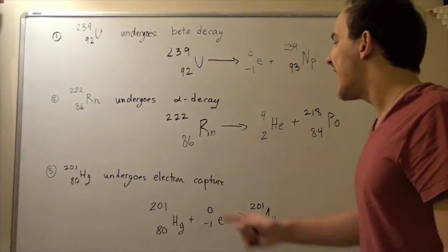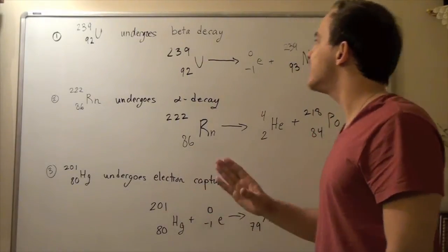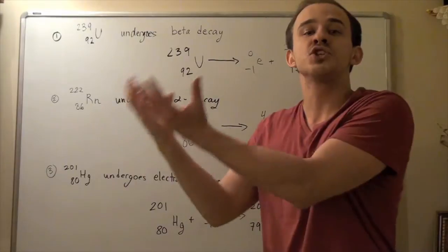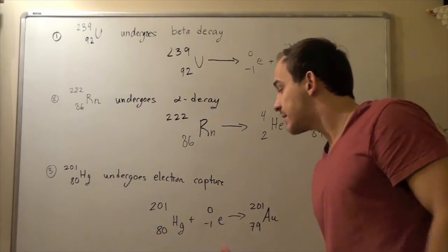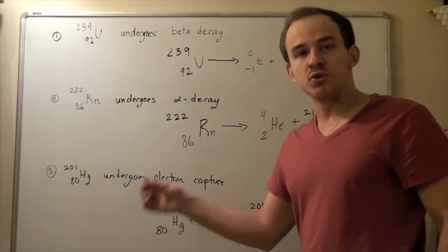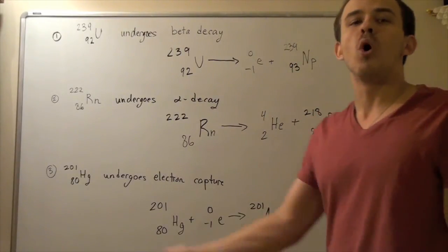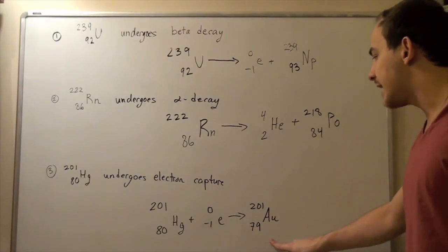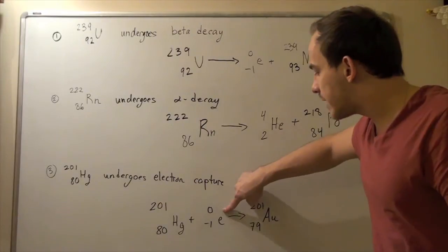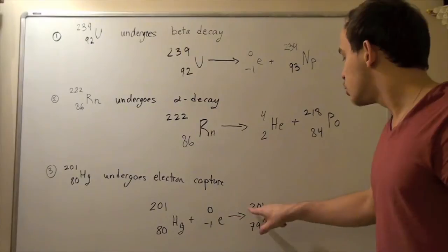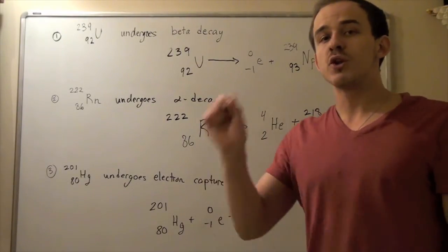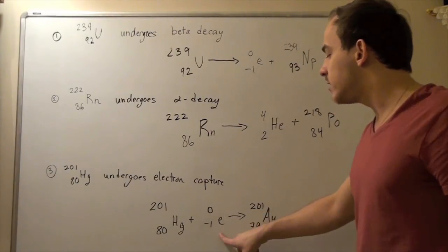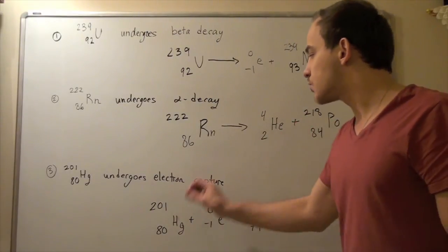This atom undergoes electron capture. Electron capture is the reverse of beta decay in the sense that instead of releasing electrons, it captures an electron. This atom takes up one electron, which reacts with a proton to produce a neutron. So now we have one less proton — 79, because 80 plus negative one gives us 79. The nucleon number remains the same because the electron does not have any neutrons. Now we have 201 minus 79, giving us 122 neutrons. That means one neutron was created from the reaction of one electron plus one proton. This is known as an electron capture reaction.